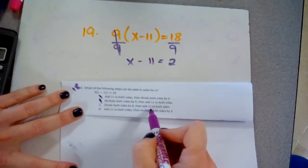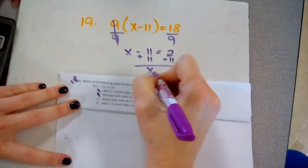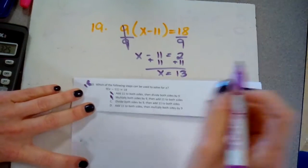The second part of C says we would then add 11 to both sides to give me x equals 13. That seems like it would work.